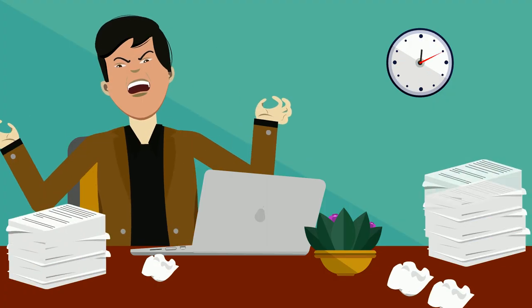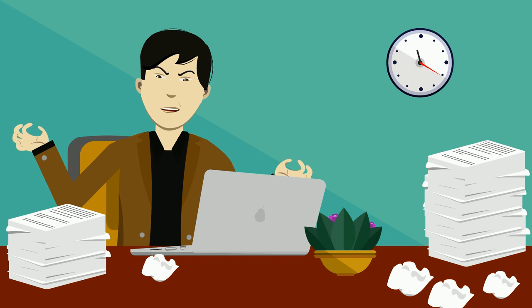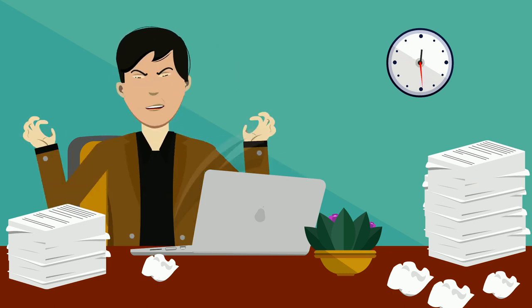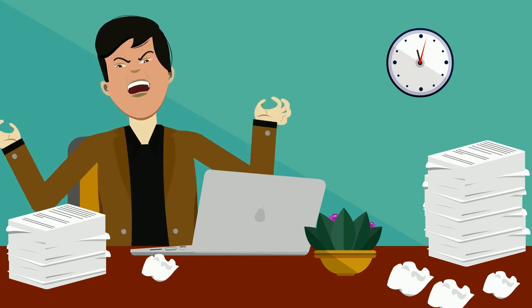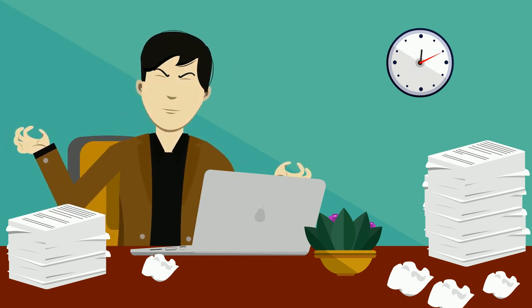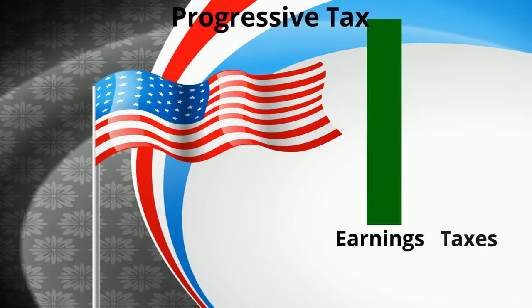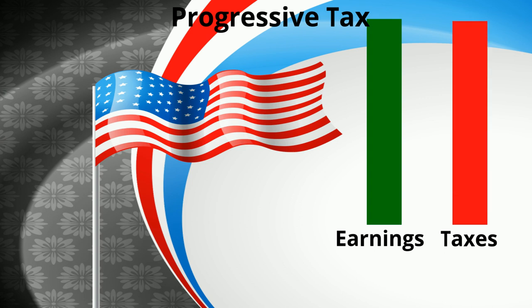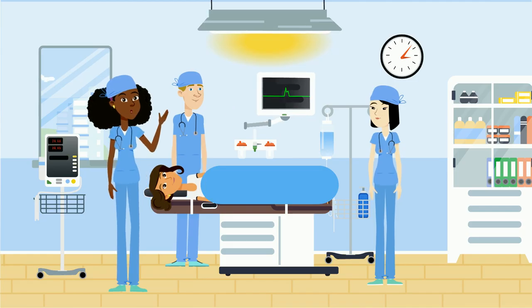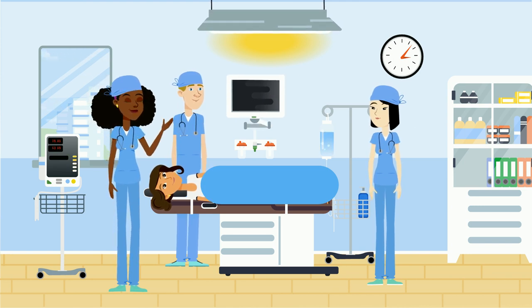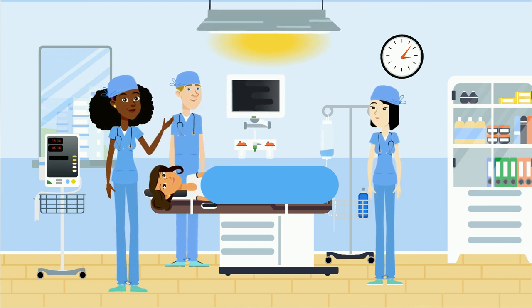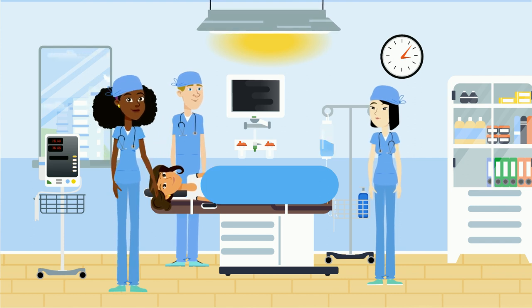Taxes fall on whomever pays the burden of the tax, whether it's the entity being taxed, such as a business, or the end customers of the business's goods. The United States has a progressive tax system, which means a higher percentage of tax revenue is collected from higher-earning individuals and corporations.